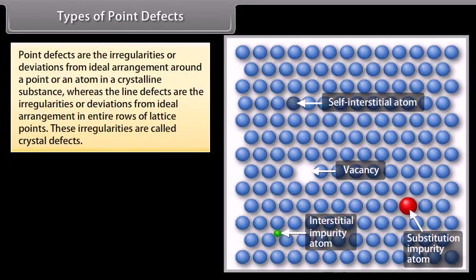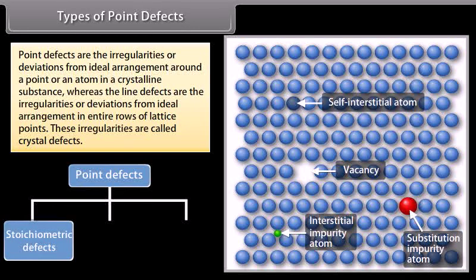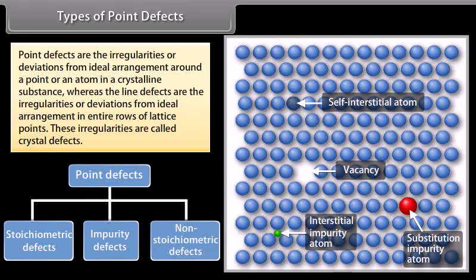Types of point defects: Point defects are the irregularities or deviations from ideal arrangement around a point or an atom in a crystalline substance, whereas line defects are irregularities in entire rows of lattice points. These irregularities are called crystal defects. Point defects can be classified into three types: stoichiometric defects, impurity defects, and non-stoichiometric defects.